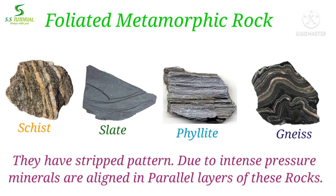Due to intense pressure, foliated rocks develop a layered structure. Slate, phyllite, schist, and gneiss are the notable examples of foliated metamorphic rocks.